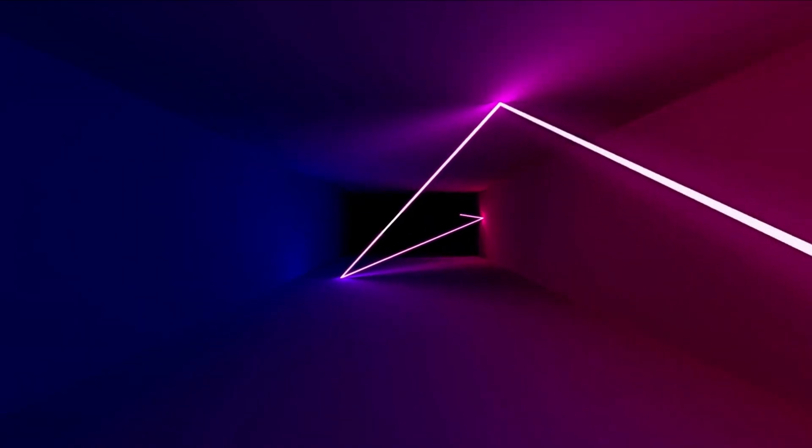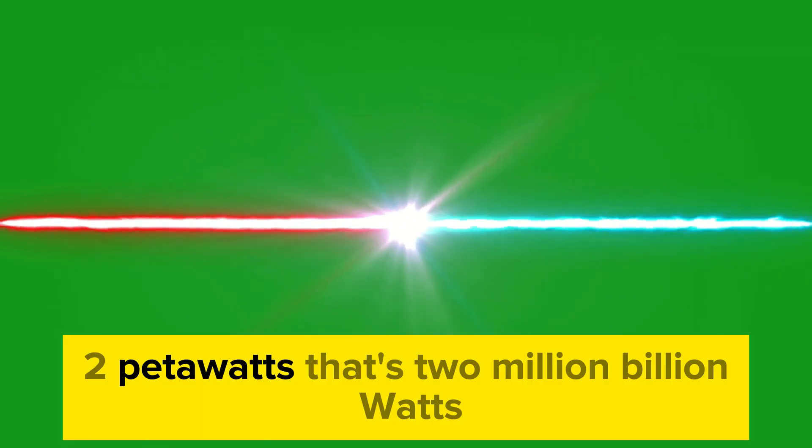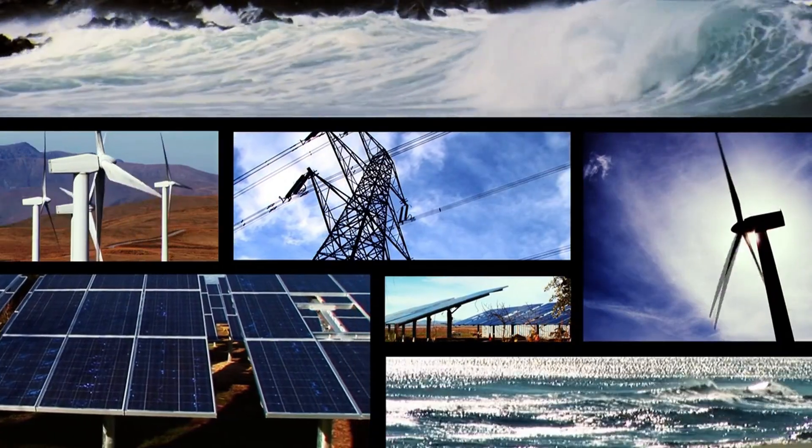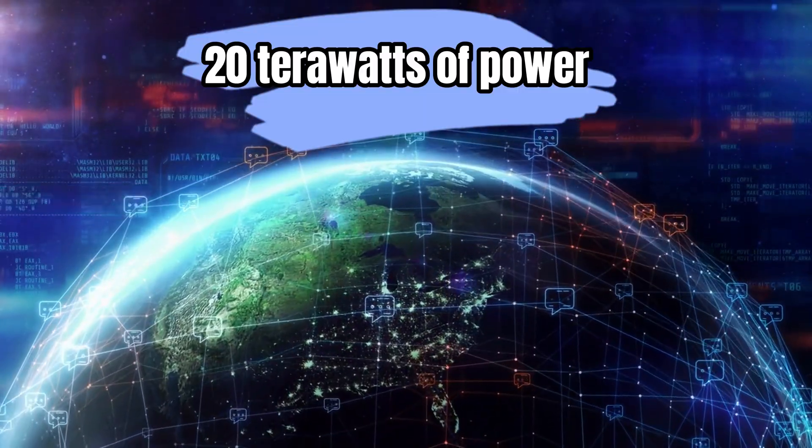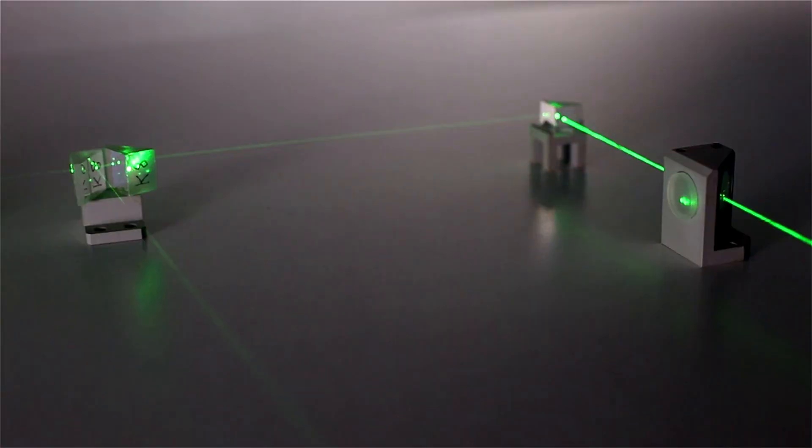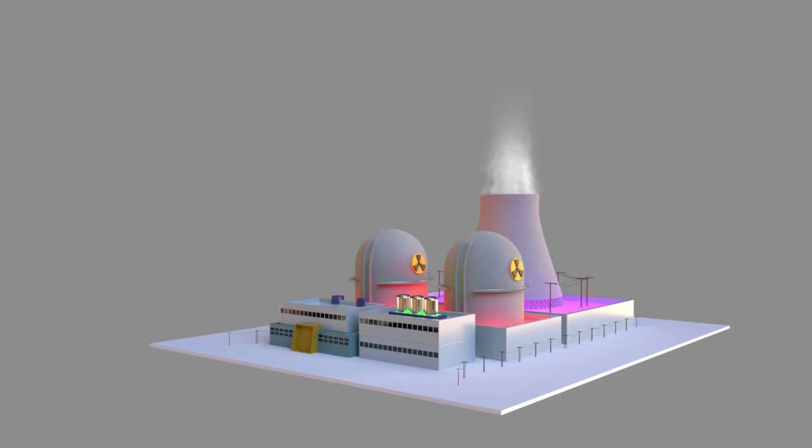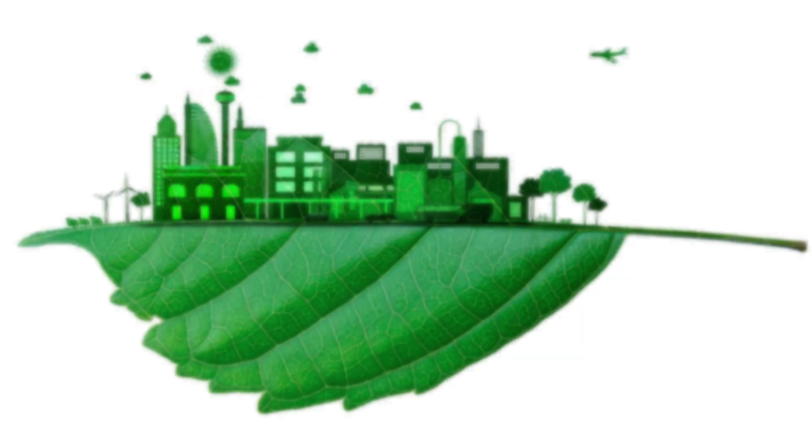To understand how incredible this is, let's talk about power. Two petawatts. That's two million billion watts. At any given second, the entire human civilization uses roughly 20 terawatts of power. That means, for a fleeting instant, ZEUS was generating over 100 times the total electrical output of every power plant, every city, and every nation combined.